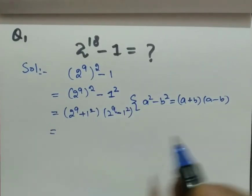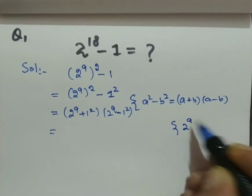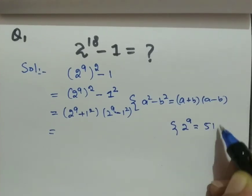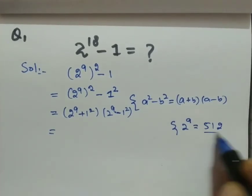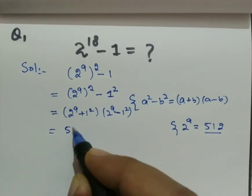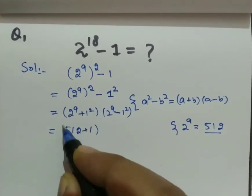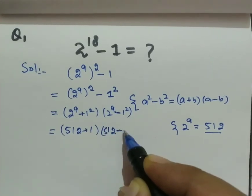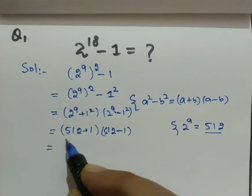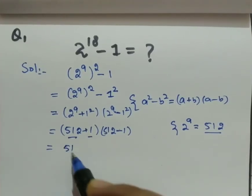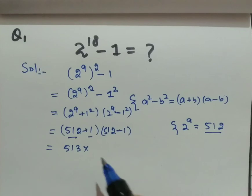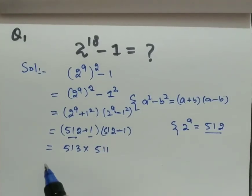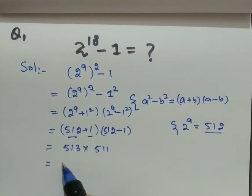2 raised to the power of 9 equals 512. So we will substitute this value here: (512 + 1) times (512 - 1). So 512 plus 1 is 513 times 511. In the next step we will do it this way.